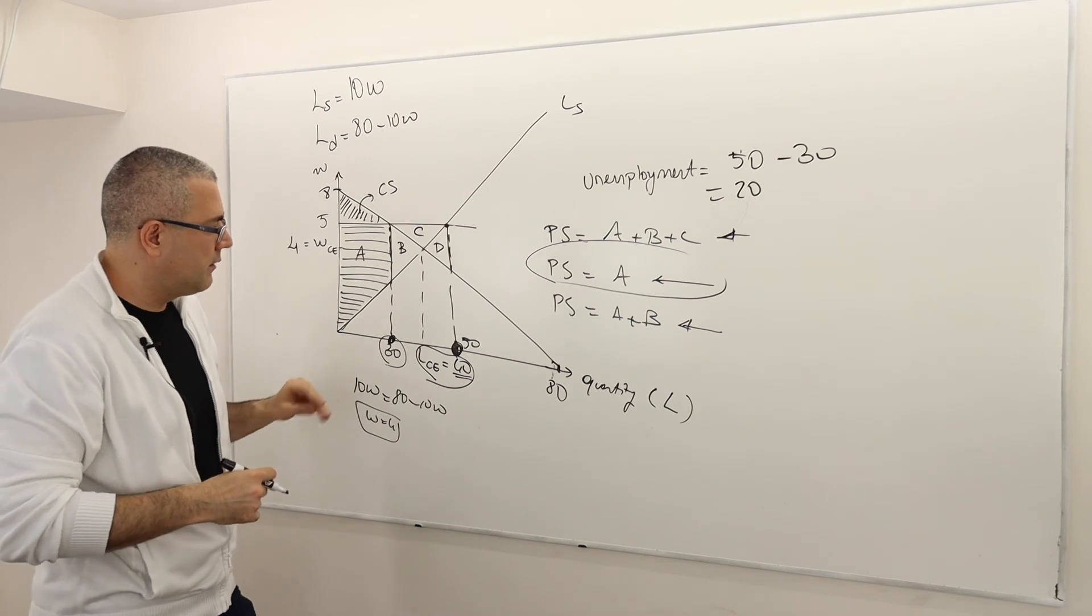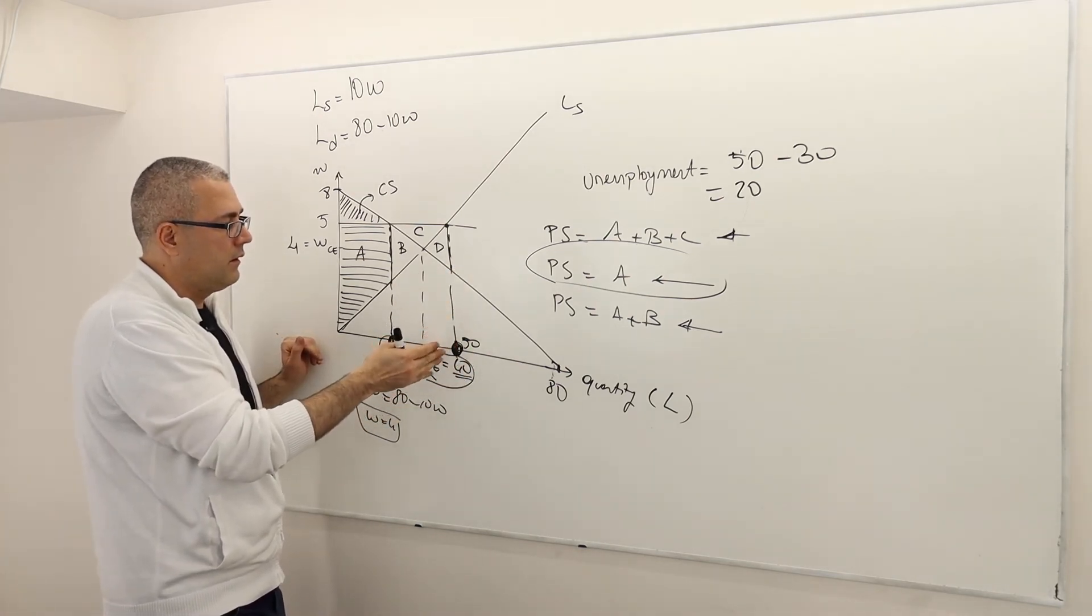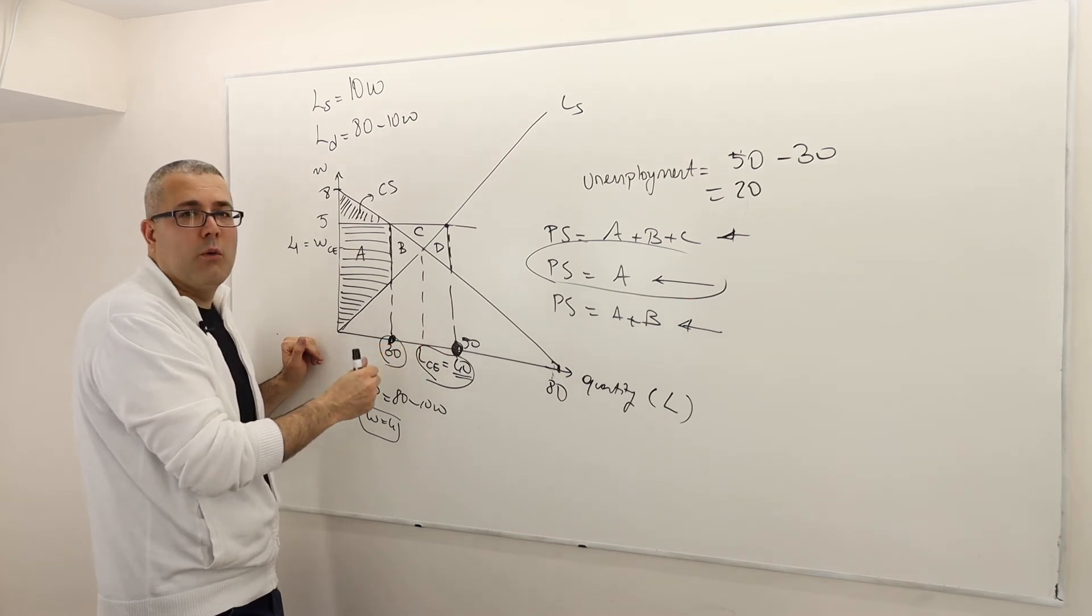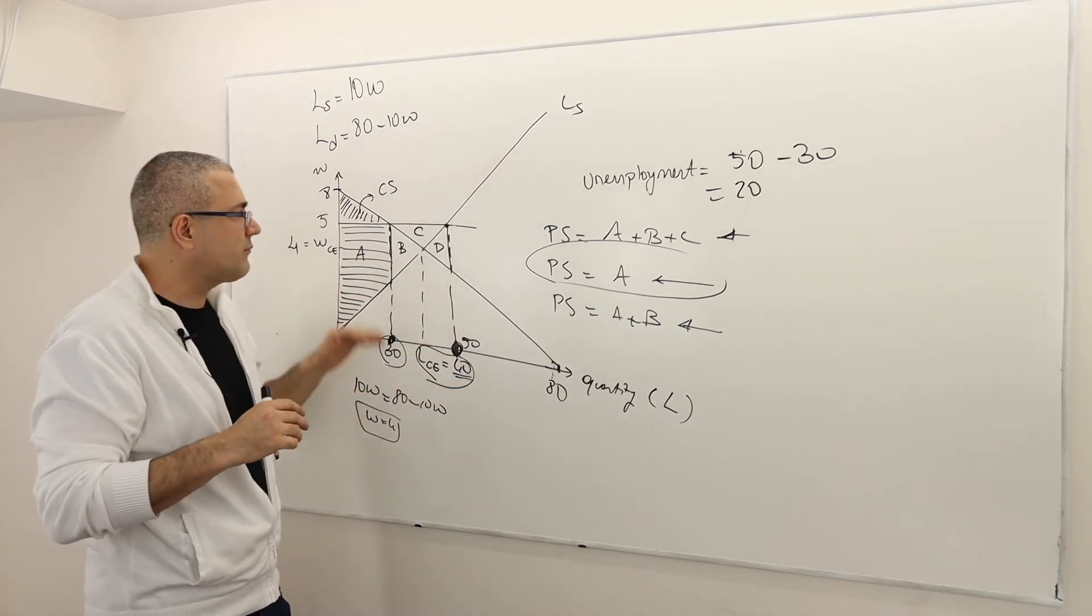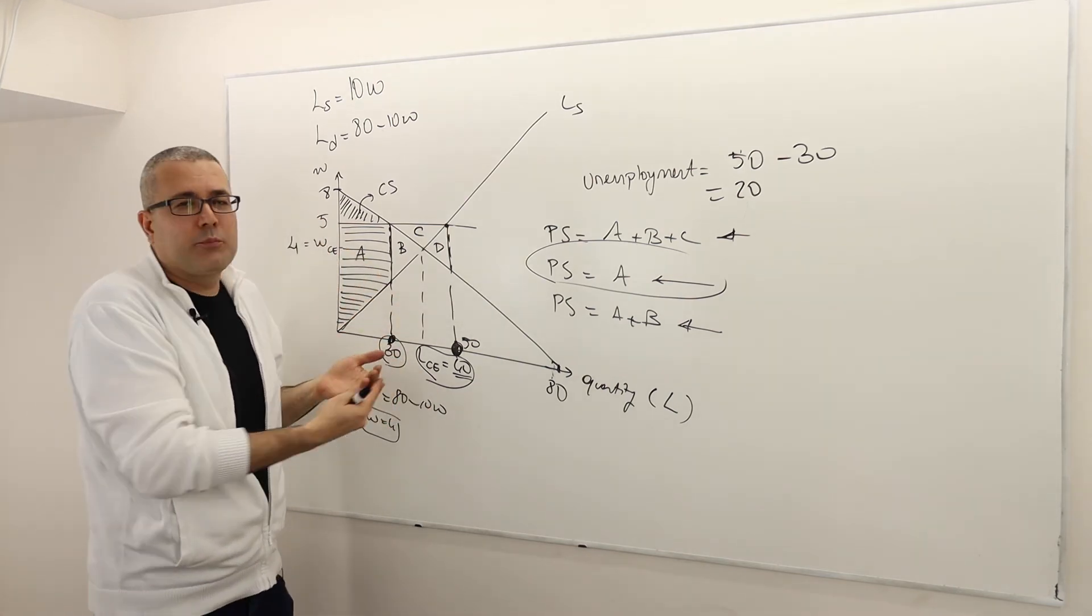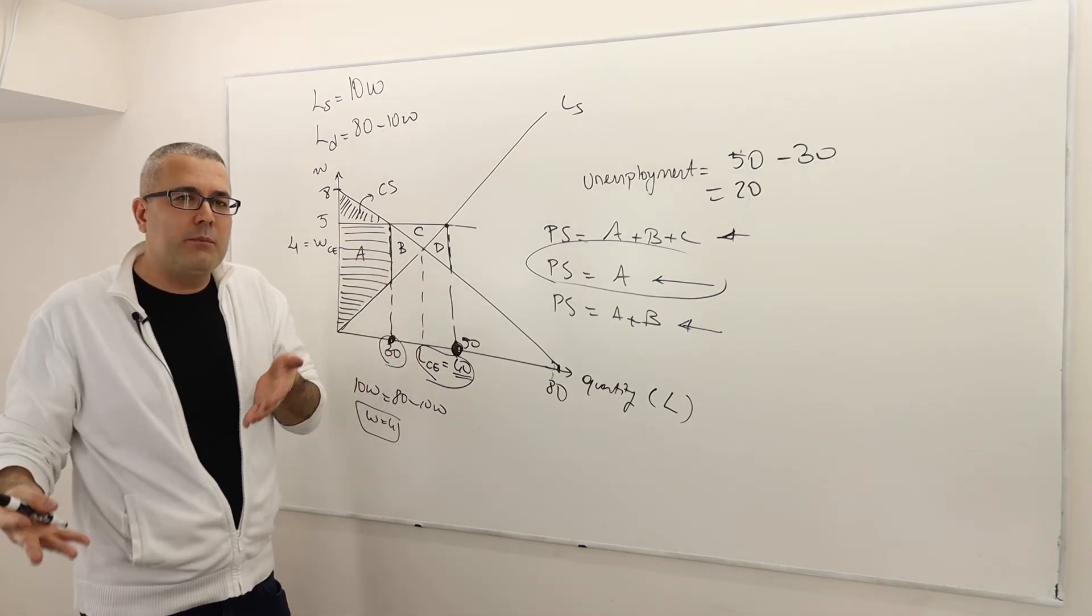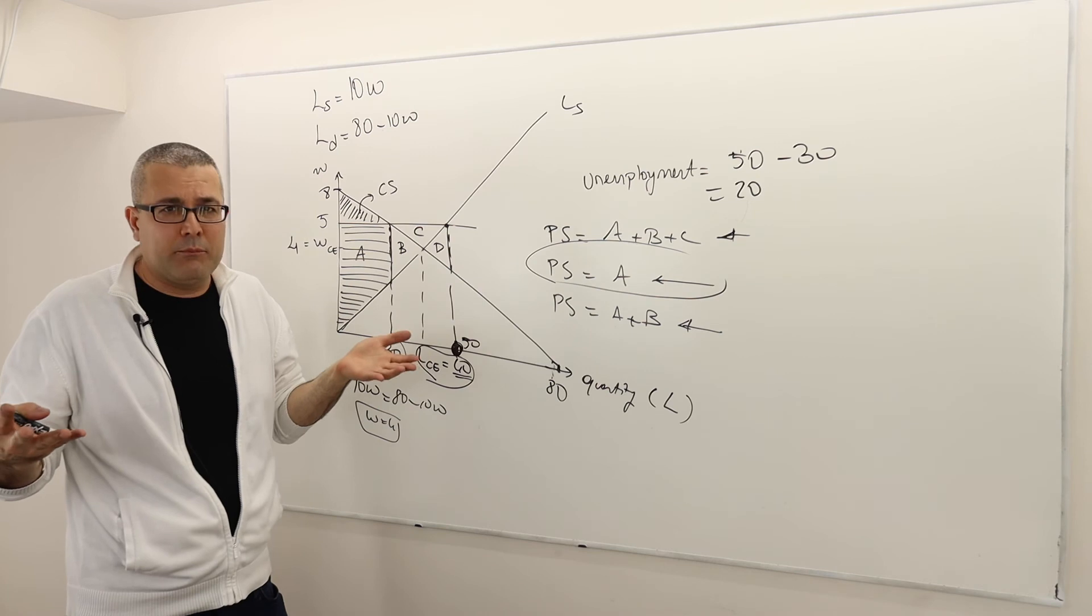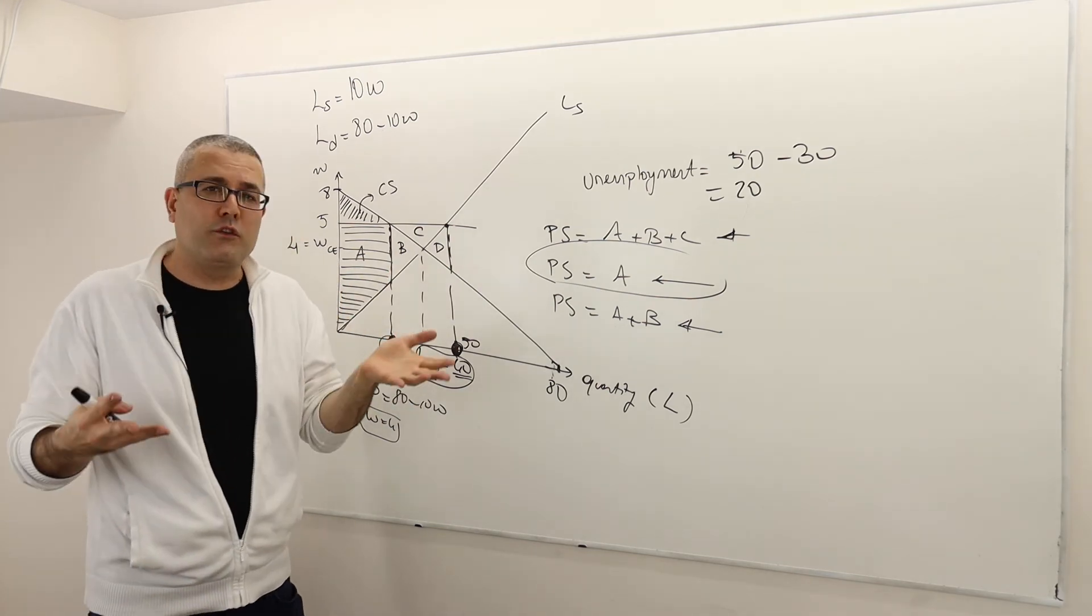But those people at 50 were never employed, because prior to the minimum wage, we only had 40. So shouldn't it still be 40 or not? No, no. Very good question. It should be 50. Because now, at a price 5, more people... So previously, when the price was 40, 40 people wanted to work, and 40 people hired, and so no unemployment. Now, at a price 5, more people want to work.